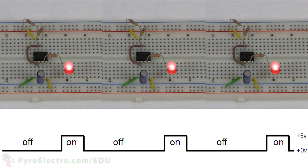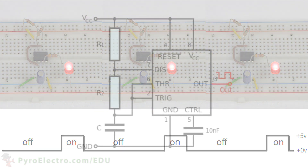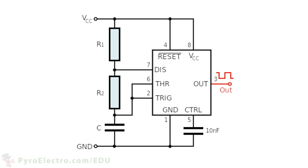Up to this point, we have been more or less just blindly following a do-as-I-say design approach, and we haven't been intelligently designing our oscillating or blinking circuits. There's actually a whole host of theory behind how to control how fast the oscillations or LED blinking occurs. So now, let's take a look at how we can control the output of the 555 timer.